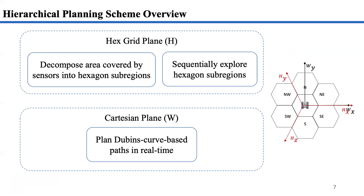The proposed method uses a hierarchical planning scheme. High-level planning runs on the hexagon grid. Based on information collected from the robot's onboard sensors, the free space is decomposed into non-overlapping hexagon subregions. Hexagon-based partitioning enjoys several benefits, including regular tessellation, uniform traveling distance to all adjacent cells, and better description of non-convex regions.